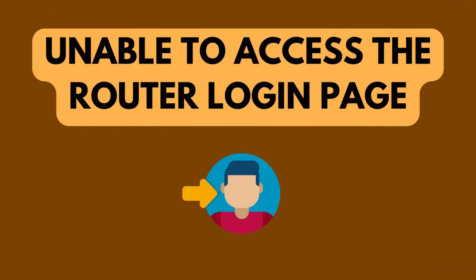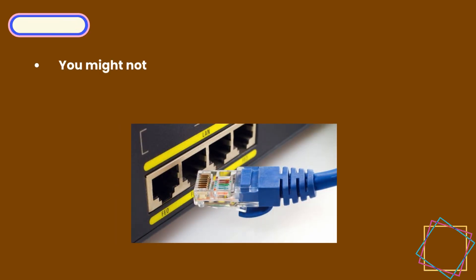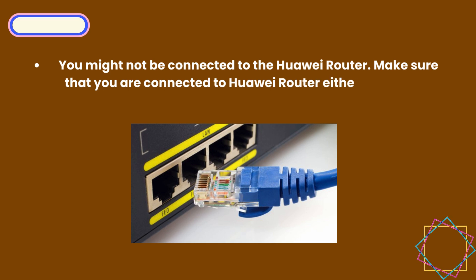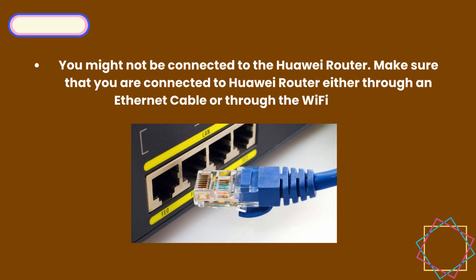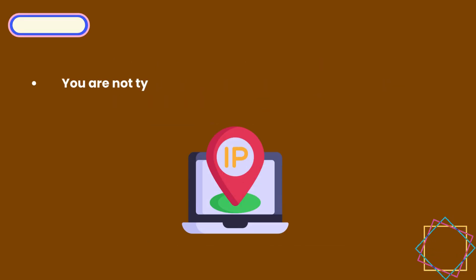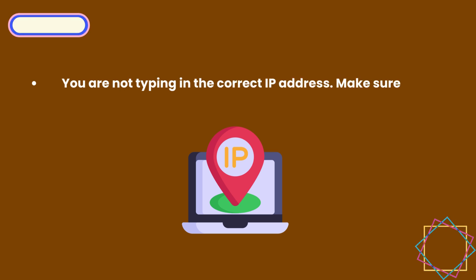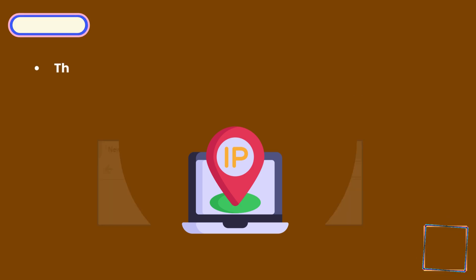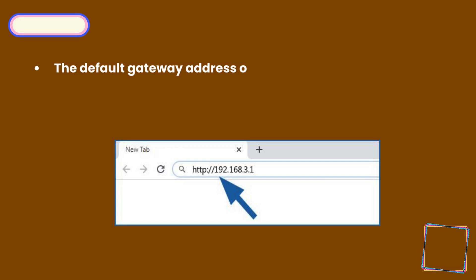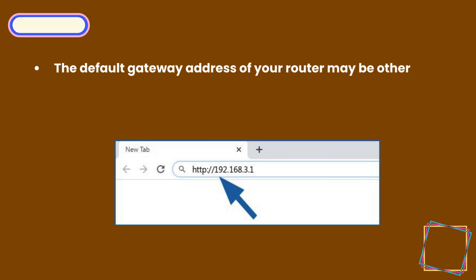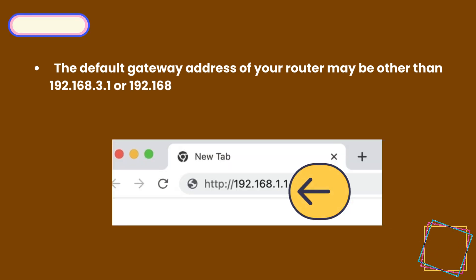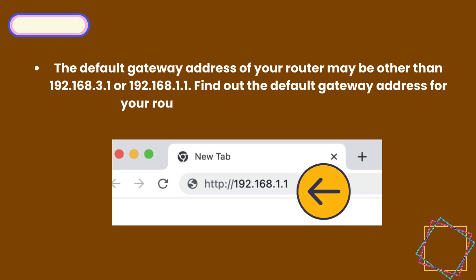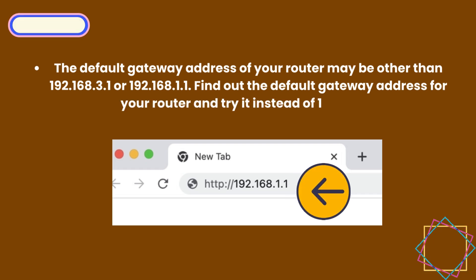Unable to access the router login page? You might not be connected to the Huawei router. Make sure that you are connected to the Huawei router either through an Ethernet cable or through the Wi-Fi network. Also make sure that you're typing the correct IP address in the address bar. The default gateway address of your router may be other than 192.168.3.1 or 192.168.1.1 — find out the default gateway address for your router and try it instead.